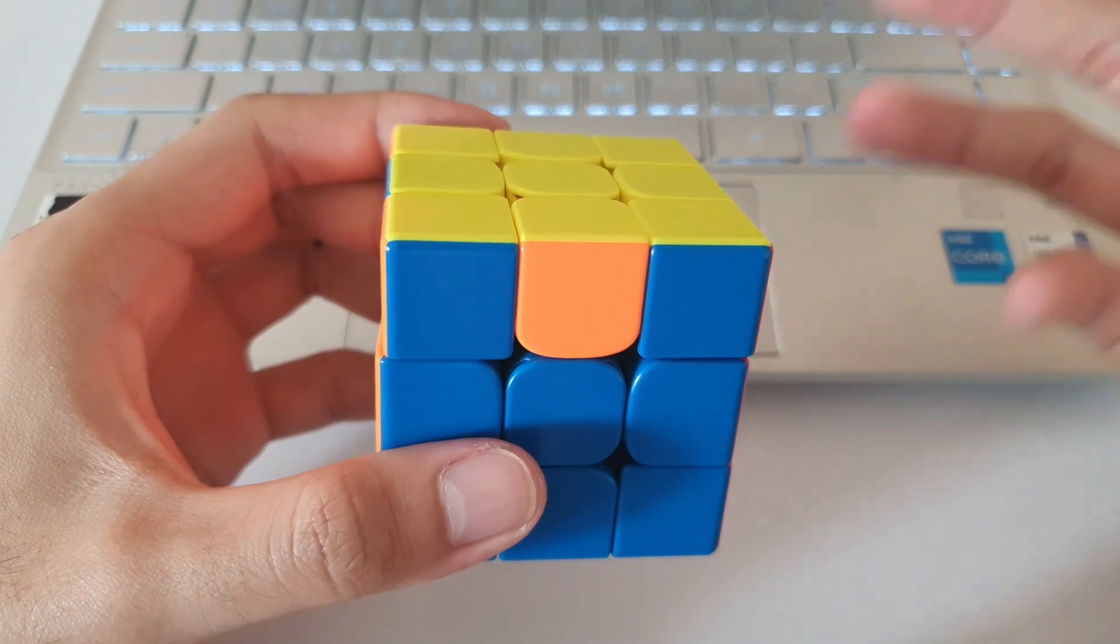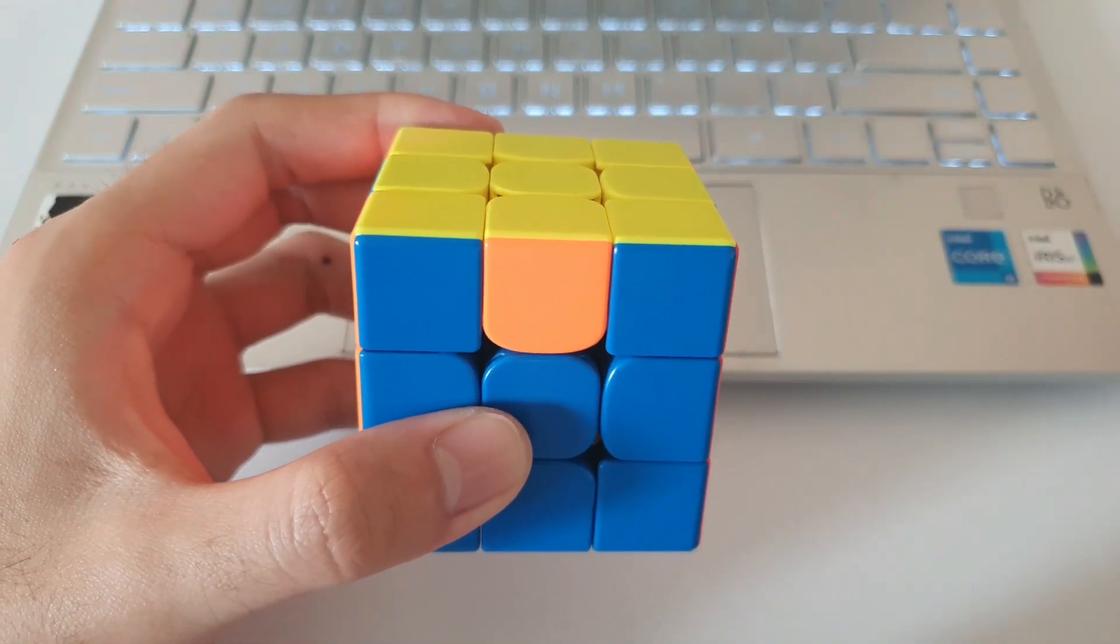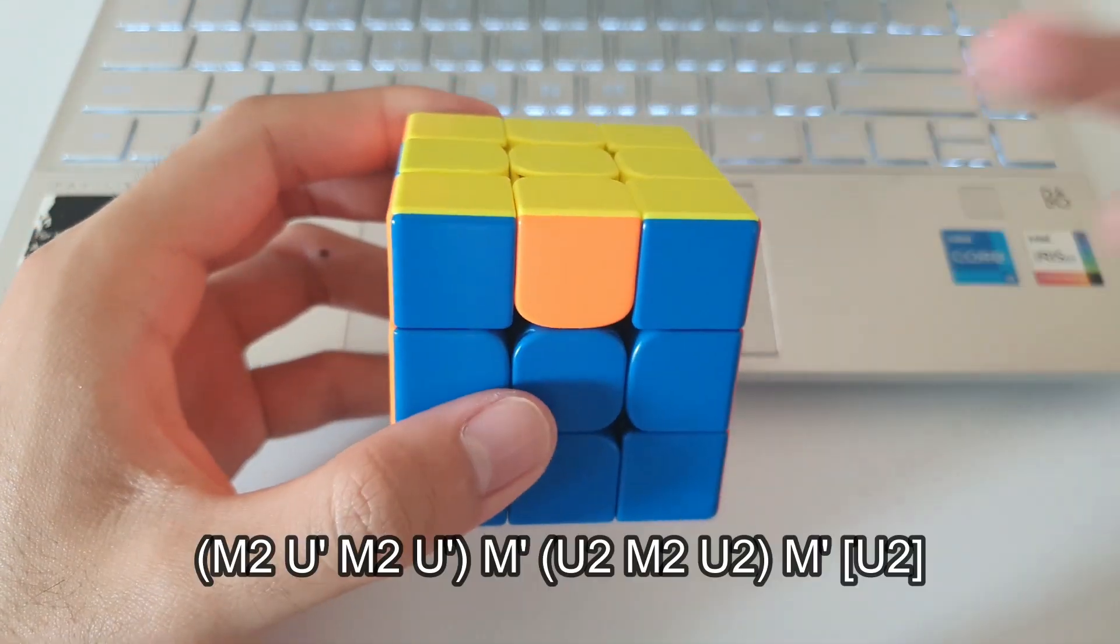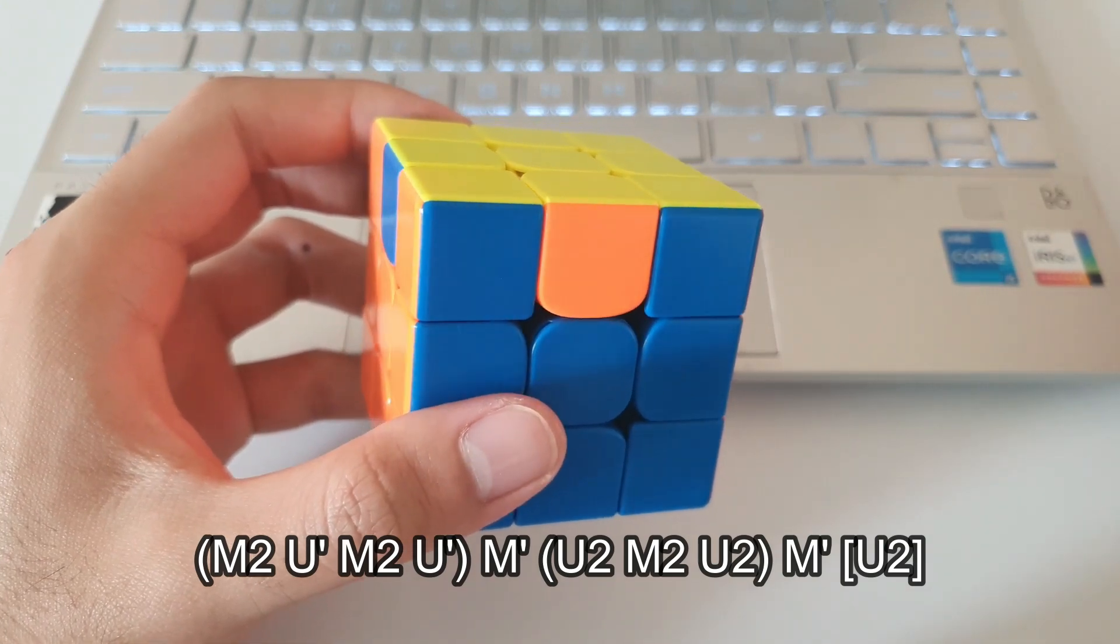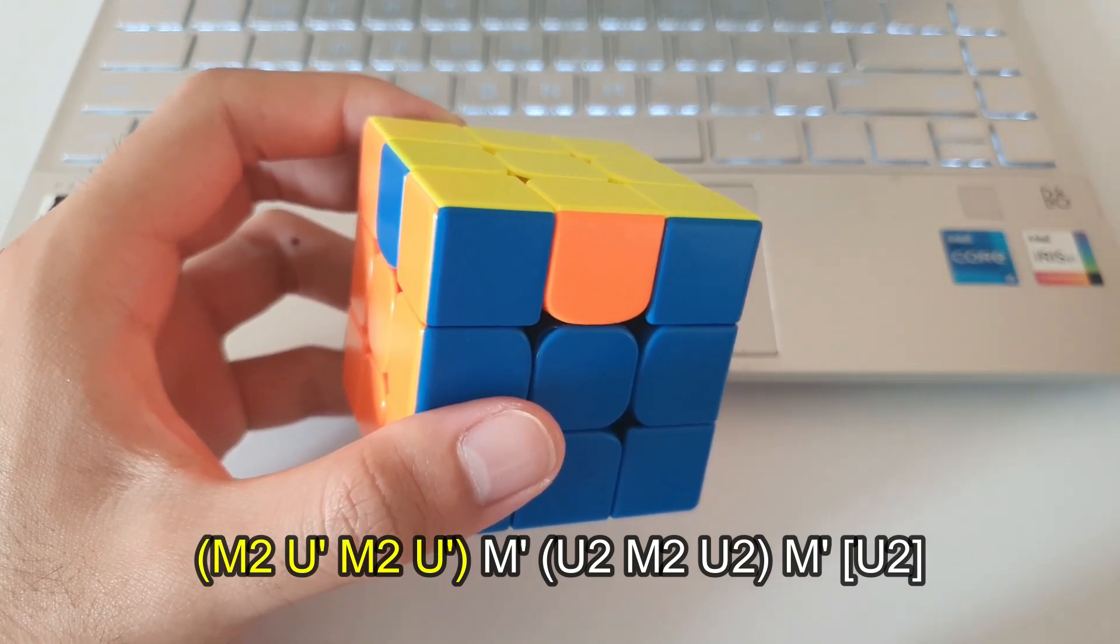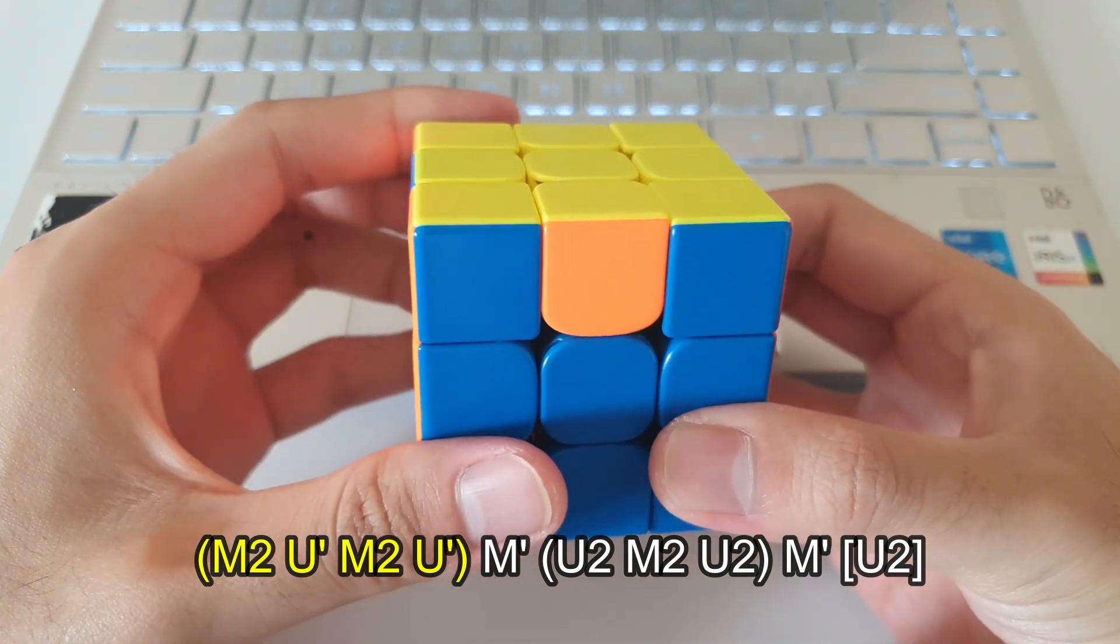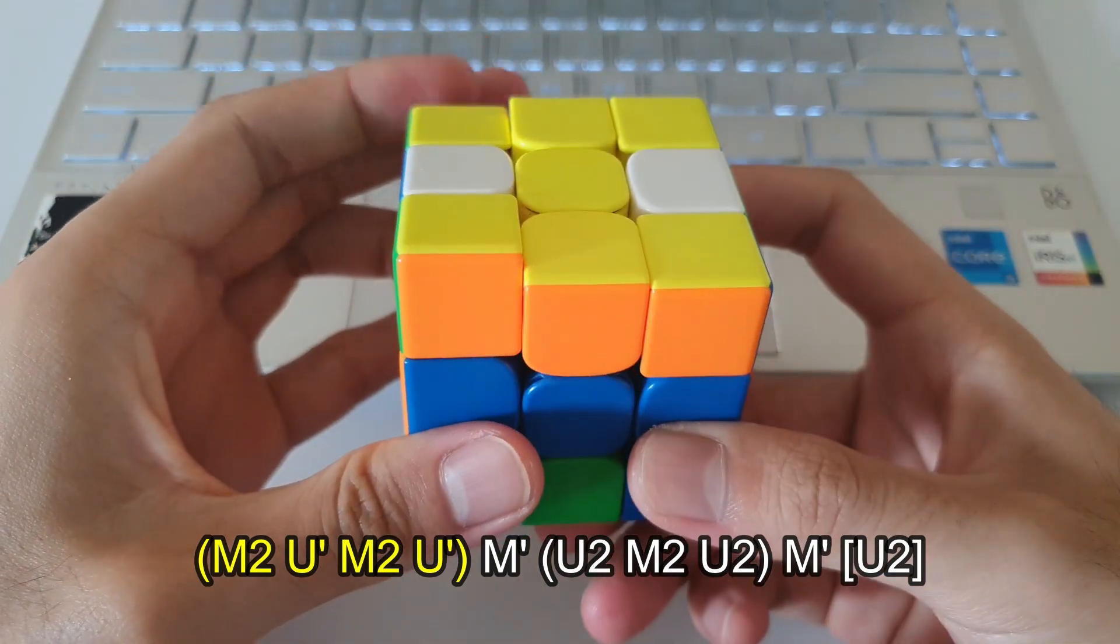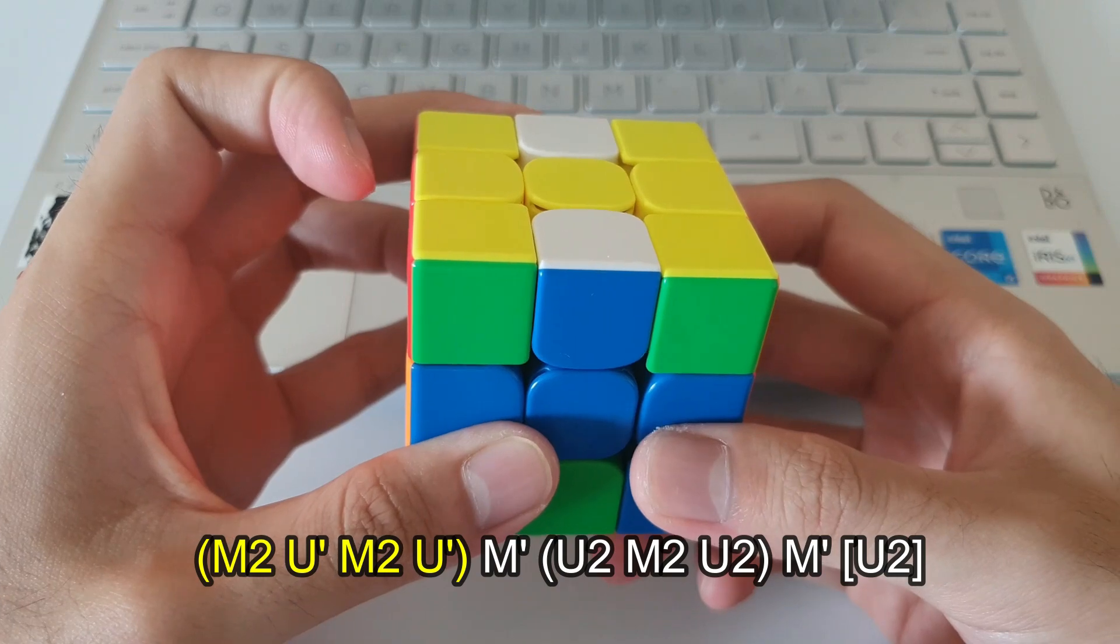Similar to the M prime algorithm, the M2 algorithm also has some pretty neat features about it that make it quite easy to remember. The easiest way to remember the start of this algorithm, as the name suggests, it starts off with an M2 and followed by U prime and that repeats again. So it goes M2 U prime and then M2 U prime again. The first four moves should be quite easy to remember.